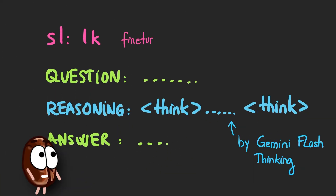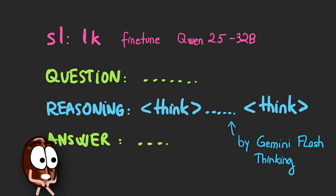Then they fine-tuned their own model called S1 from a 32B parameter Qwen 2.5 model, using those thousand carefully curated examples just via next token prediction — just like the pre-training objective of any autoregressive LLM — so supervised fine-tuning and no reinforcement learning involved. Because it trained on all those reasoning chains outputted by Google's Gemini Flash thinking, S1 could elicit reasoning chains too after the end of training. Training a model on another model's output is also called distillation, by the way.